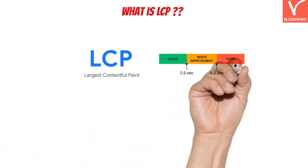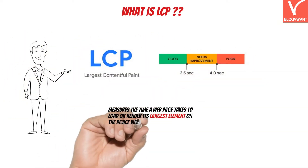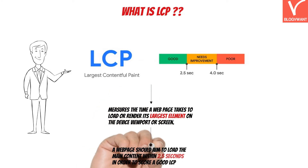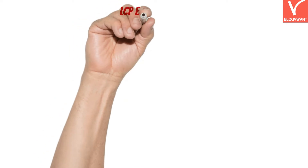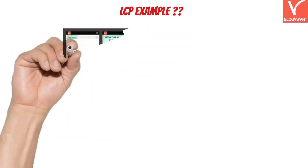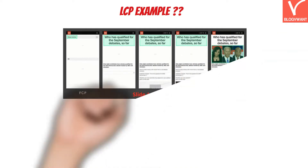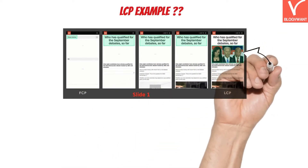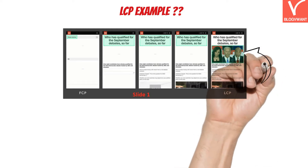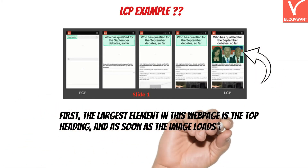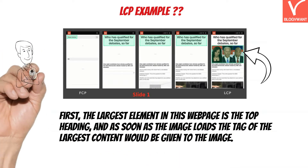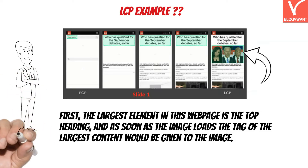LCP is one of the main core web vitals of the Google Page Experience algorithm. This core web vital measures the time a webpage takes to load or render its largest element on the device viewport or screen. To understand LCP, let's have a look at this example provided by Google. You can see that the largest content has been constantly changing as the content is loading. First, the largest element is the top heading, and as soon as the image loads, the tag of largest content is given to the image. LCP is basically the time a webpage takes to load this image or the current largest element in a viewport.